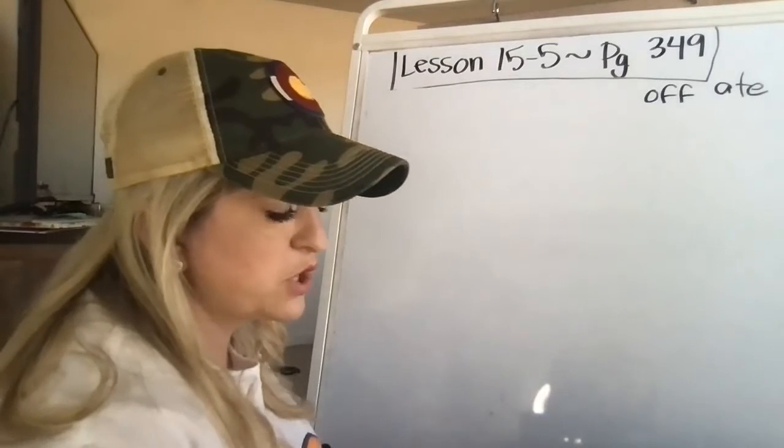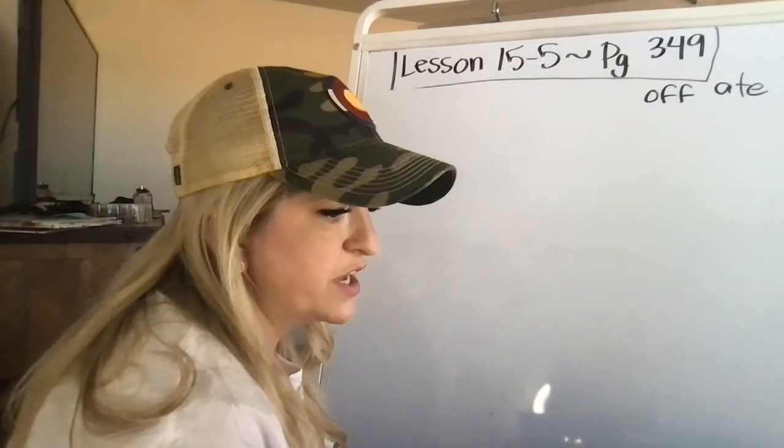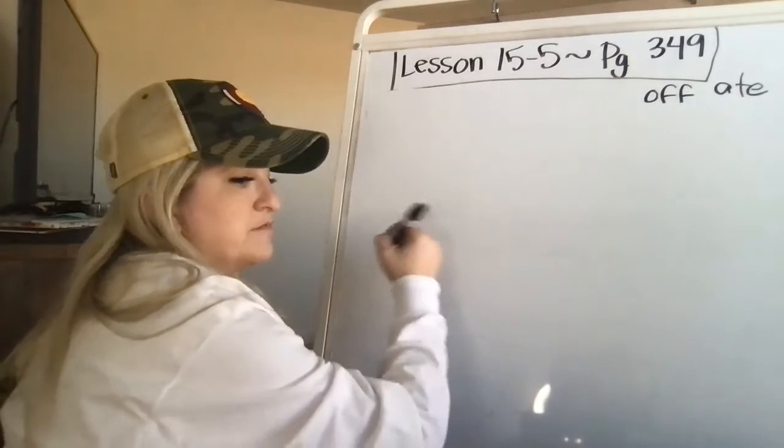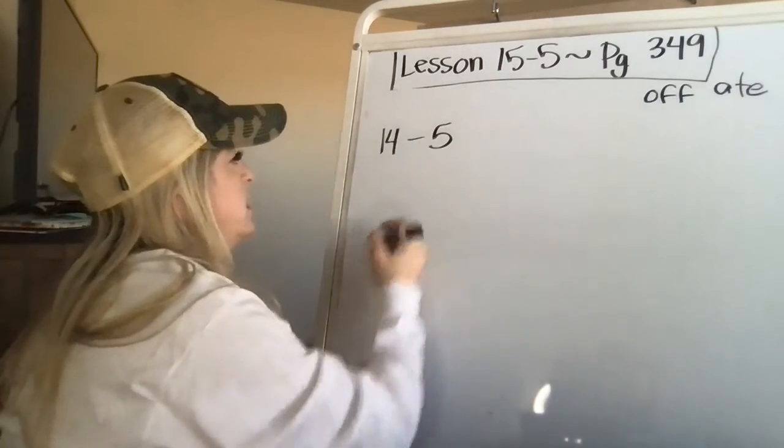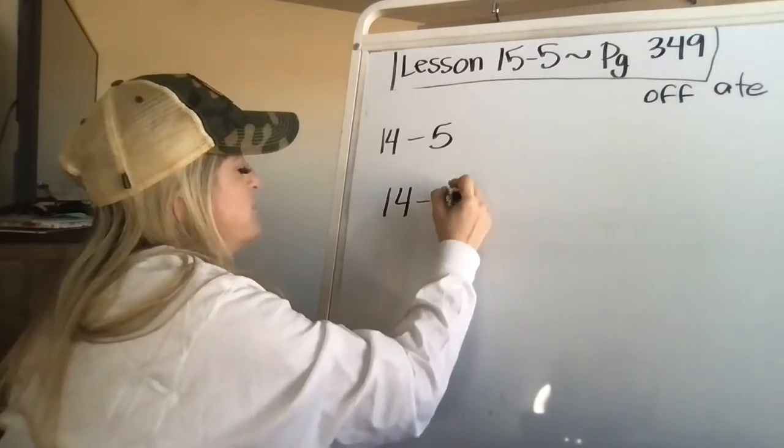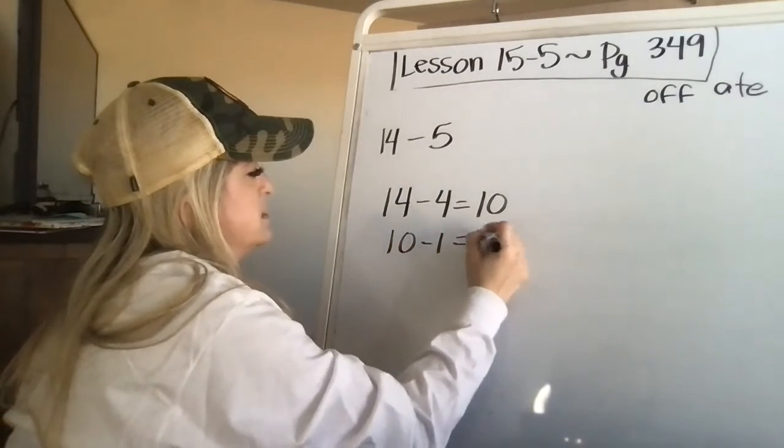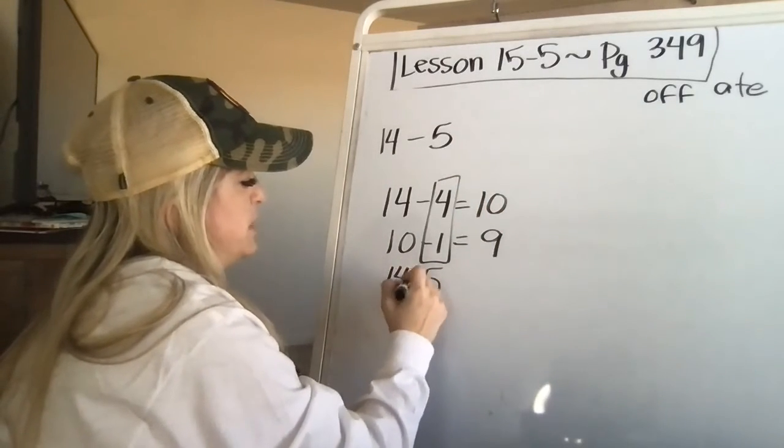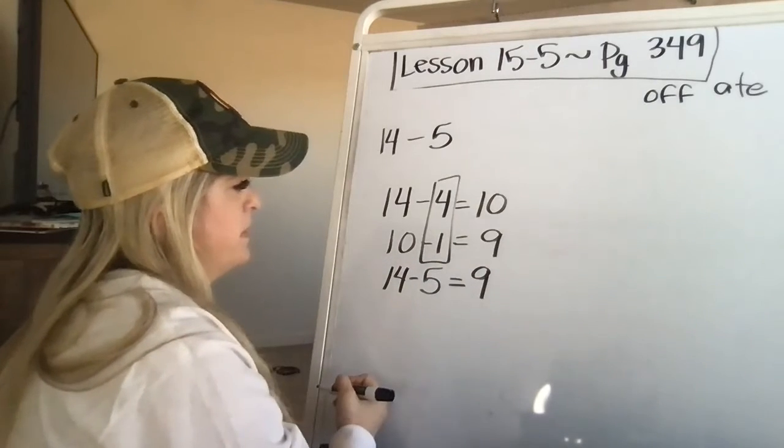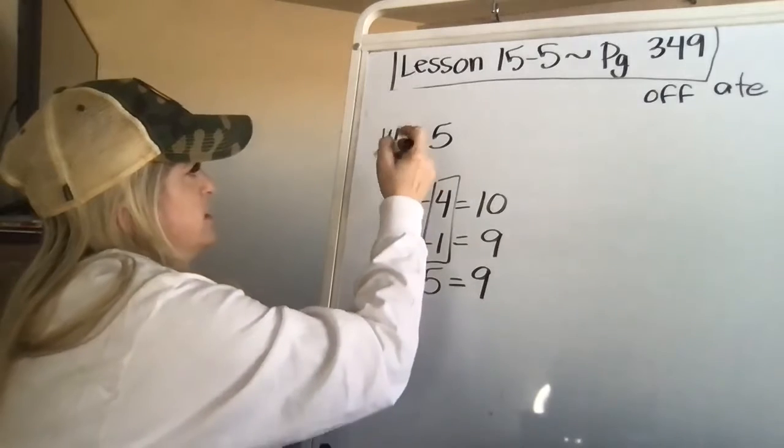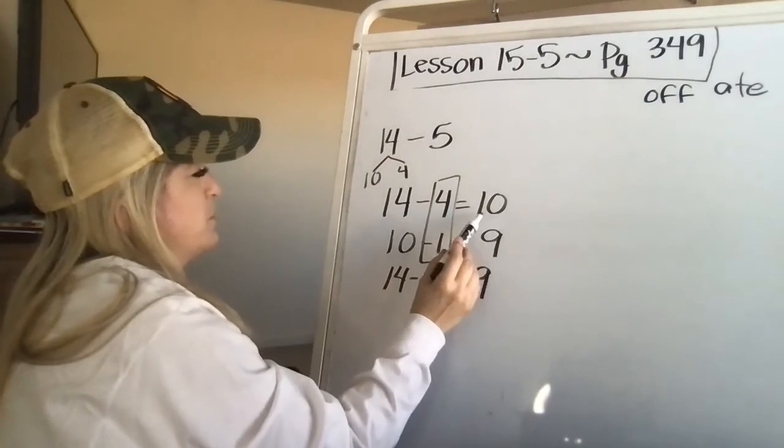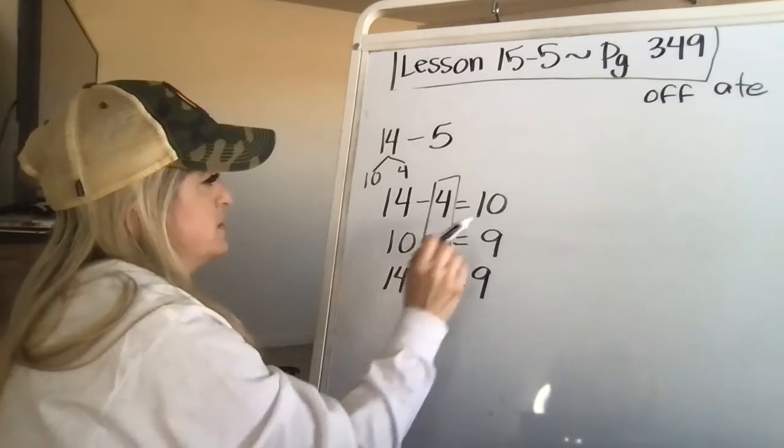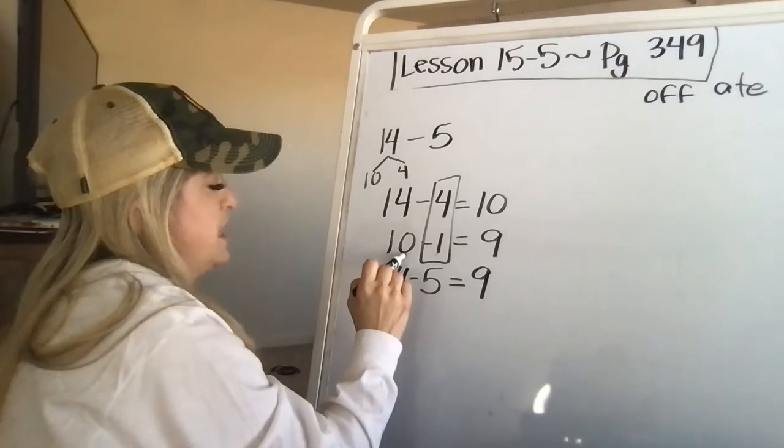All right. There are 14 birds in a tree. Five birds fly away. How many birds are in the tree? Okay. So 14, five fly away. So 14 minus four is 10, 10 minus one is nine, four plus one is five. Look at that. I took, so it's 14 minus five is nine. So what I did is I did 14 minus four, which is kind of what you're doing when you're jumping back on the number line is 10. But I'm not taking away four, I'm taking away one.